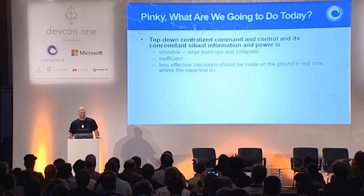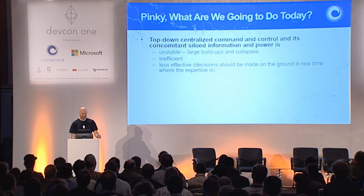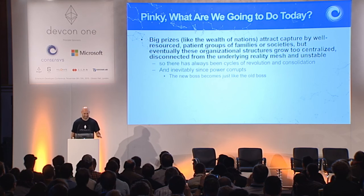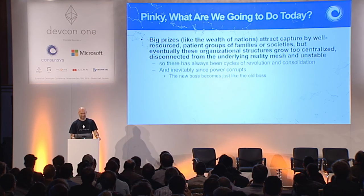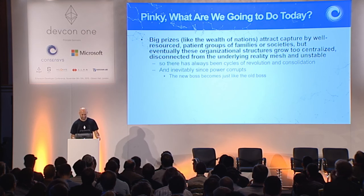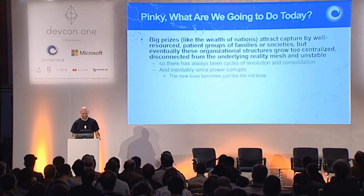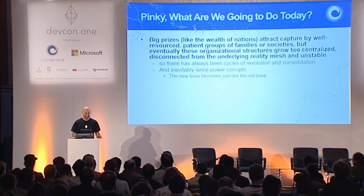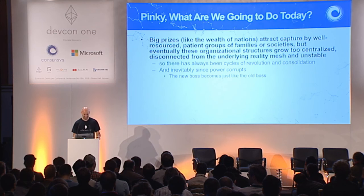Top-down centralized command and control, with its concomitant siloed information and power, is unstable. It's inefficient. It's reasonably effective, but it could be more effective. The big prizes, like the wealth of nations, tend to attract capture by well-resourced, patient groups. So there have always been cycles of revolution and consolidation. And inevitably, since power corrupts, the new boss becomes just like the old boss.